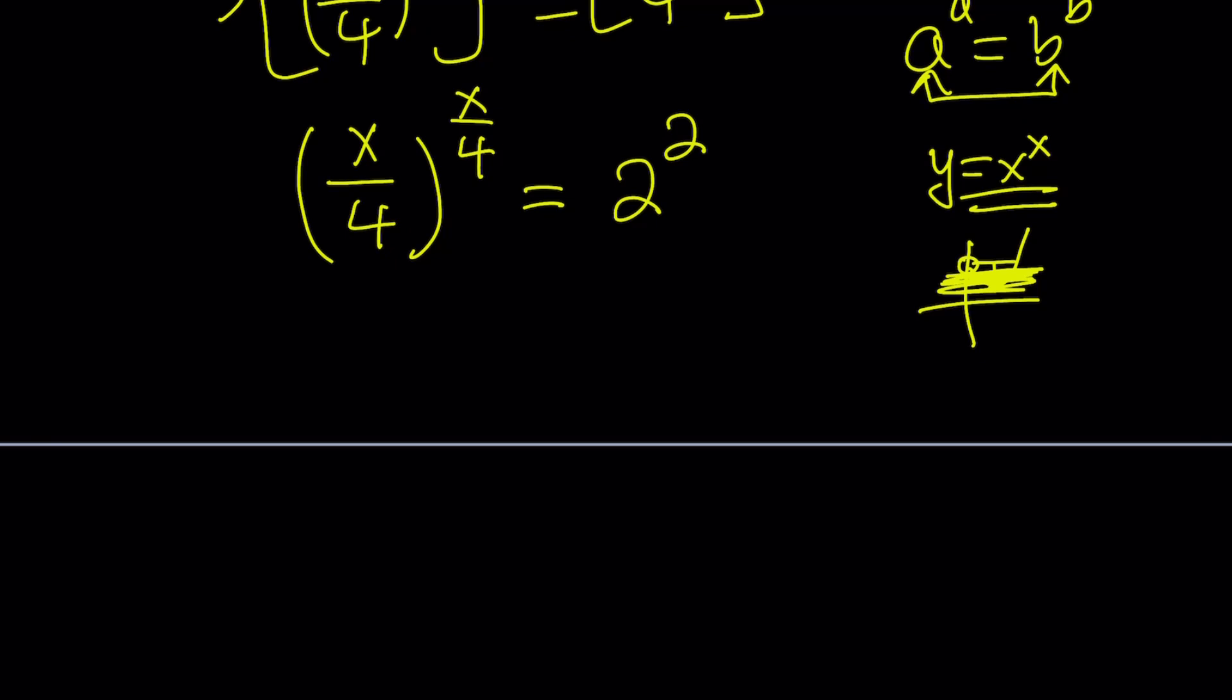So now this means x over 4 equals 2, or x over 4 equals 2 works. And that means x equals 8 is a solution. And guess what? There are no other solutions because 2 is a large number.